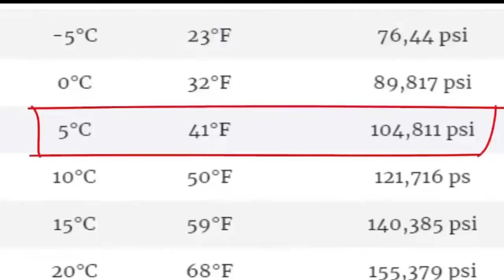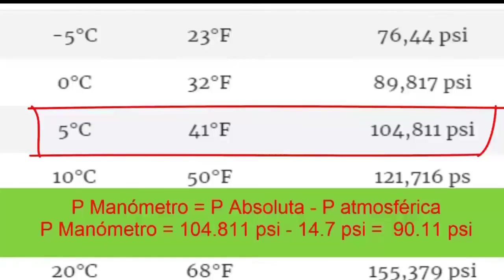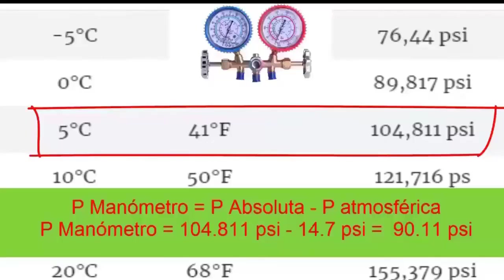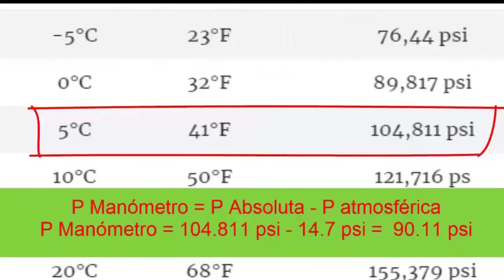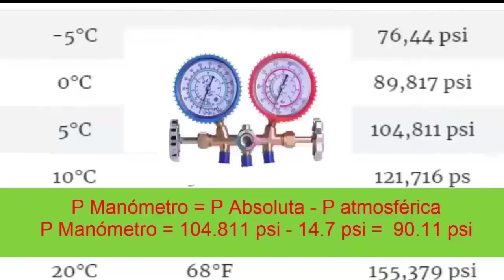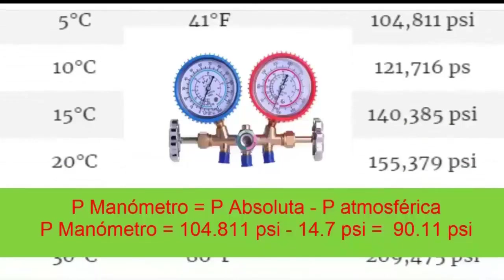For conservation without freezing, which works with an evaporator temperature of 5 degrees Celsius (about 41 degrees Fahrenheit), the absolute pressure is 104.811 PSI. Subtracting the atmospheric pressure of 14.7 PSI results in a gauge pressure of 90.11 PSI.